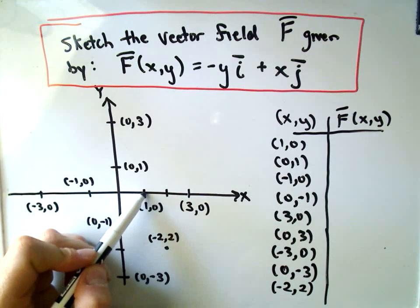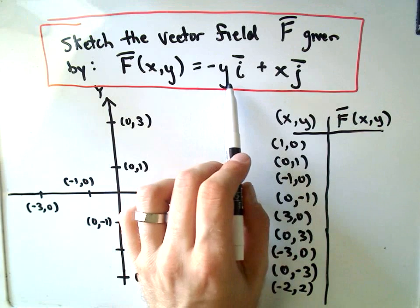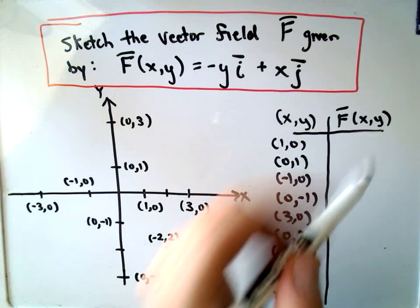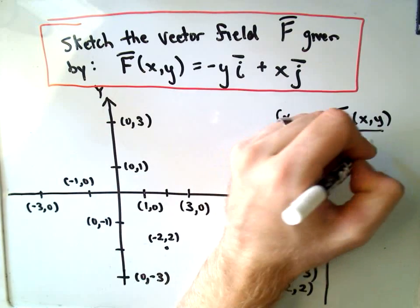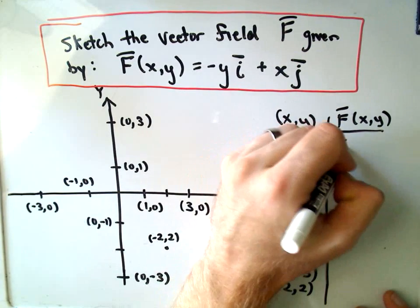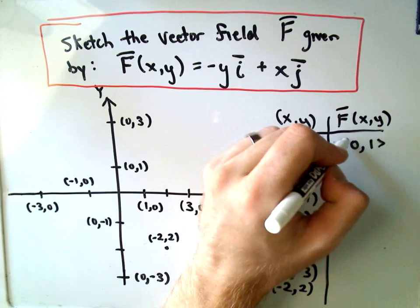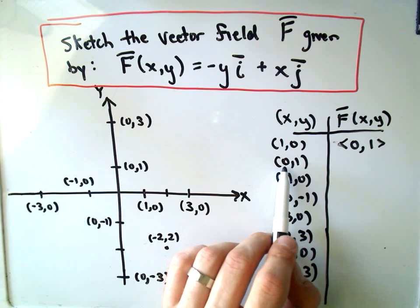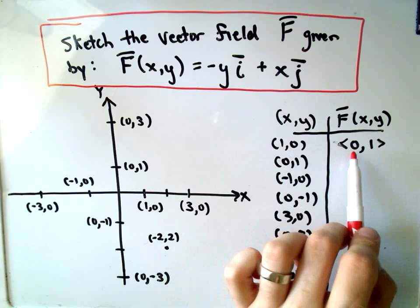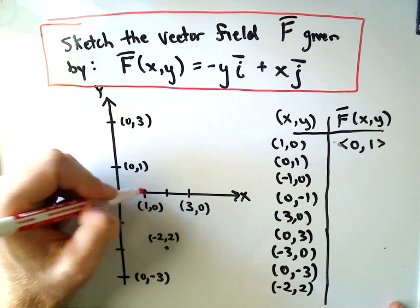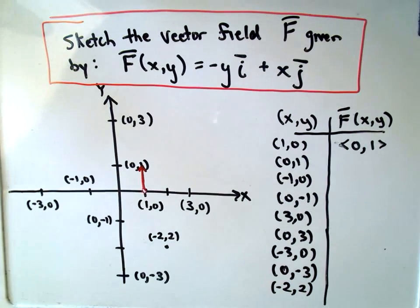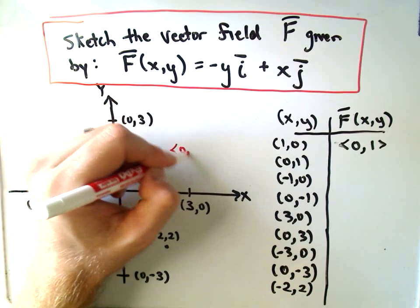Suppose we want to sketch the vector that's associated with the point (1,0). Well, if we plug (1,0) into our formula, notice that the x value goes with the j component, and the y value goes with the i component. So we would get negative zero i plus one j. And we can simply rewrite that as <0,1> using our vector notation. It says the vector associated with the point (1,0) is going to be the vector <0,1>. That means it's just a vector that doesn't move left or right, but just goes up. It points directly upwards, and it goes out one unit.